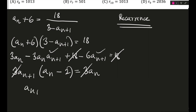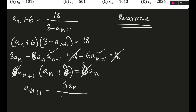Wait — I made a calculation mistake. The correct expanded form has aₙ · aₙ₊₁ (not 3aₙ · aₙ₊₁), and the constant term is aₙ + 6, not aₙ − 2. After correcting, we get aₙ₊₁ = 3aₙ / (aₙ + 6). That is the correct recurrence relation.